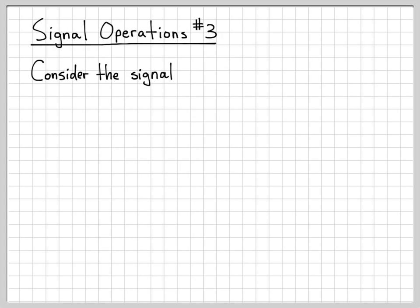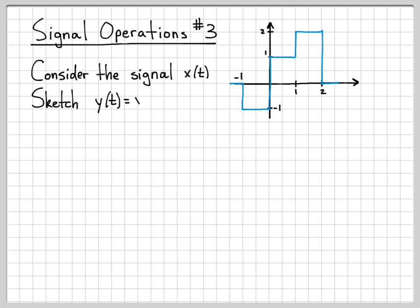The signal we're going to work with in this example is the signal x(t), and x(t) looks like this. It's kind of rectangle signals all stacked together. What we're going to do in this example is sketch the signal y(t) = x(-t/2 - 4).